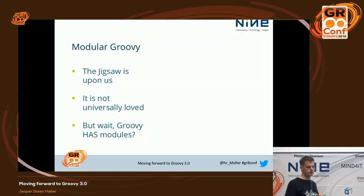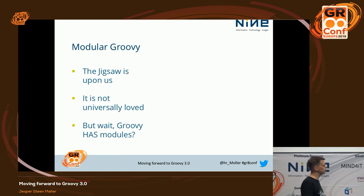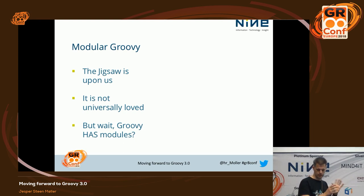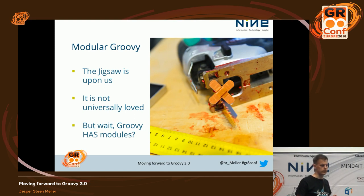So, Jigsaw is upon us — it's not universally loved. Steven Coburn did a very good blog entry just last month about what the Java module system means for library designers, and the same applies to Groovy. Basically, you need to support Java 8, but you also need to support Java 9, and you can't do that unless you put a proper module descriptor in. It's a sticky situation. And there's another thing: Groovy already has modules, because we have these sub-projects with XML and Swing and whatever. So what happens to those? That's a problem with Jigsaw — people get hurt.